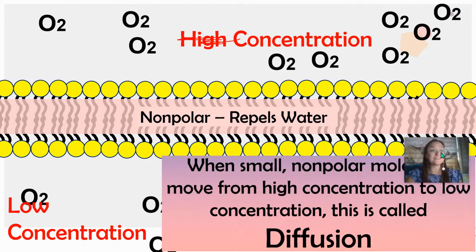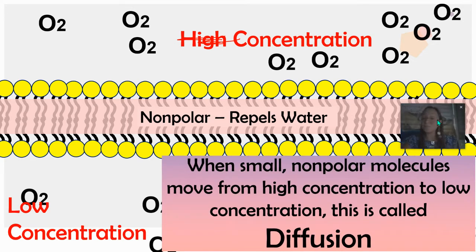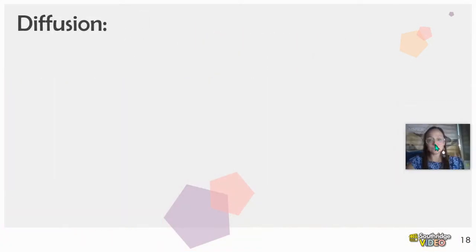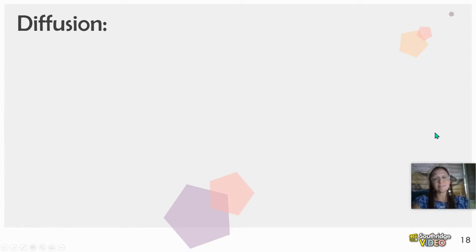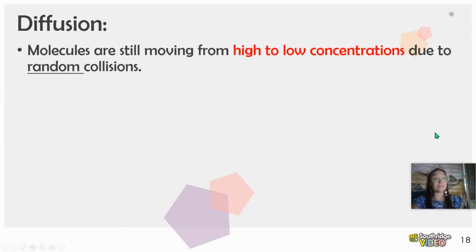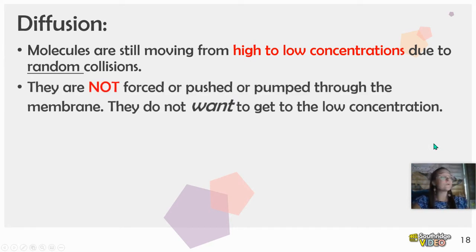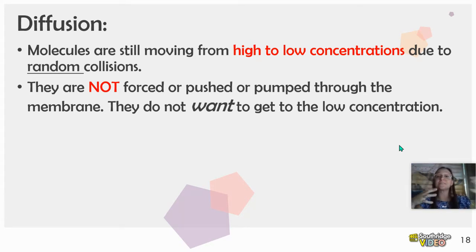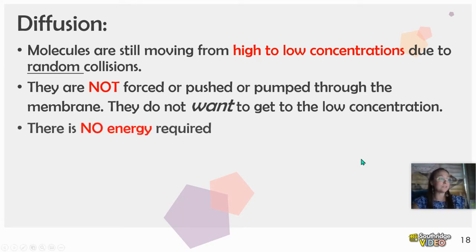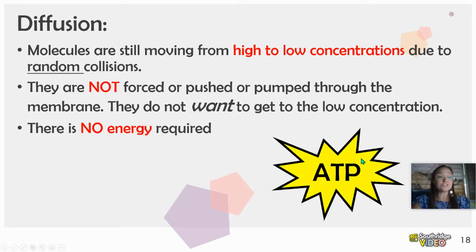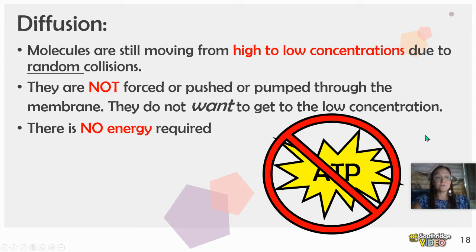When small non-polar molecules move from a high concentration to a low concentration, this is called diffusion. They are doing it based on random collisions and the fact that they can simply cross through that lipid bilayer — moving from high to low concentration due to random collisions. They're not forced, pumped, or pushed through the membrane. They just randomly collide and spread out until equilibrium is reached, and there is no energy required in simple diffusion.